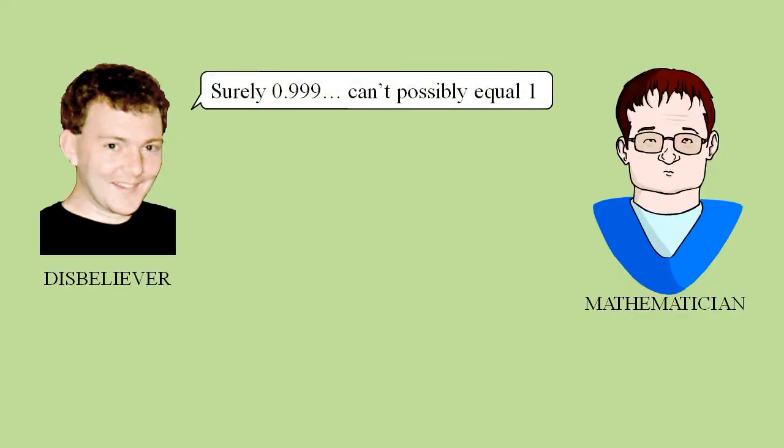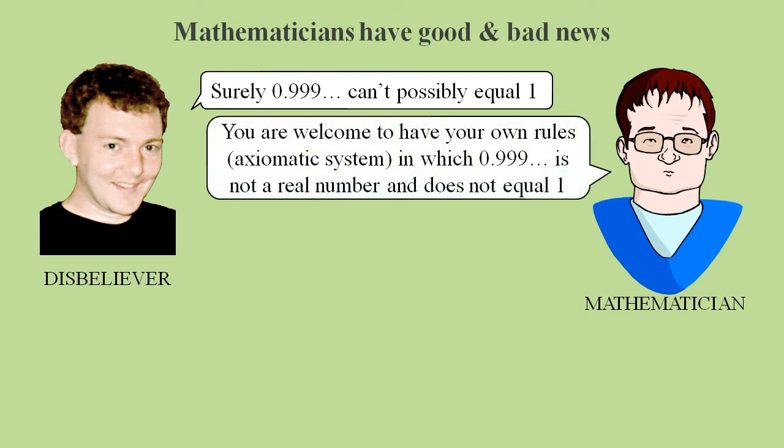If you think 0.9 recurring can't possibly equal 1, then the mathematicians have good and bad news for you. The good news is that they will accept an argument for 0.9 recurring does not equal 1, but only if you've redefined 0.9 recurring to be something other than a real number, and you've used your own non-standard rules of logic.